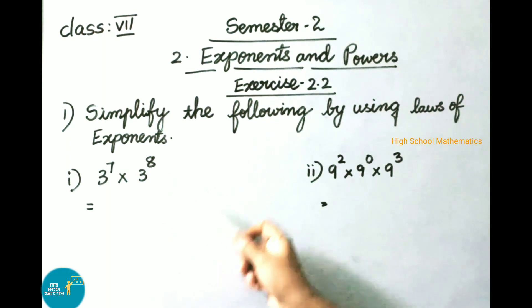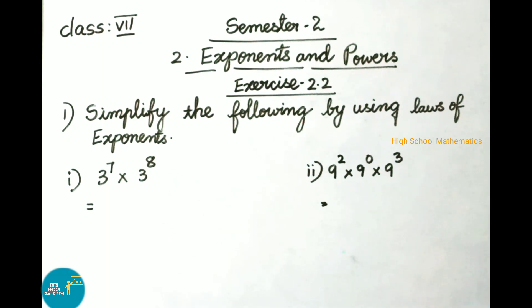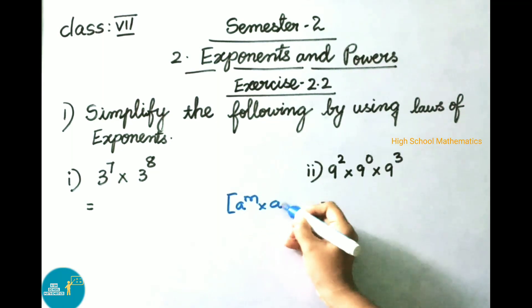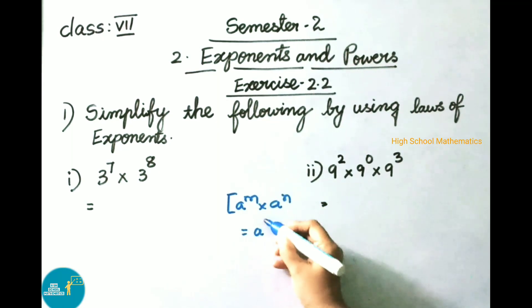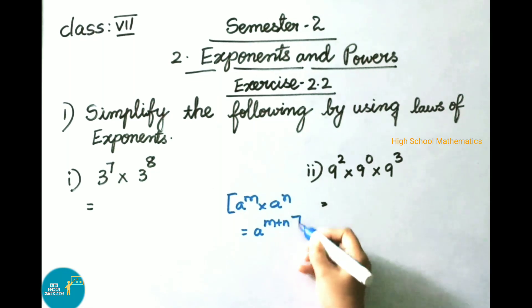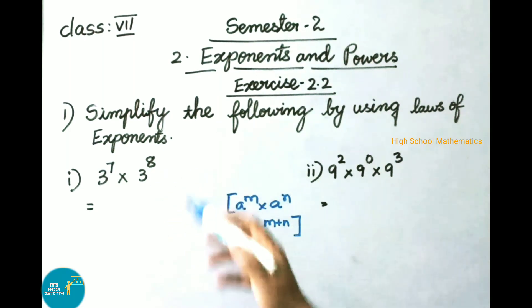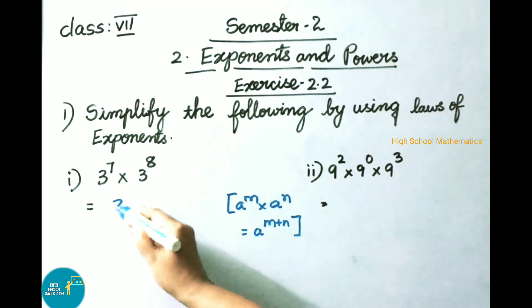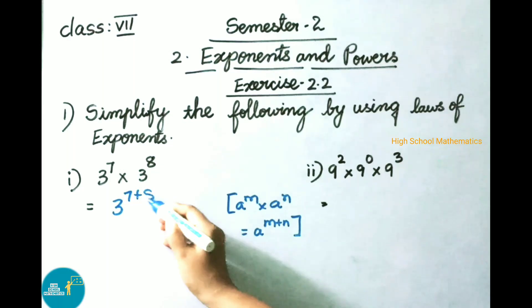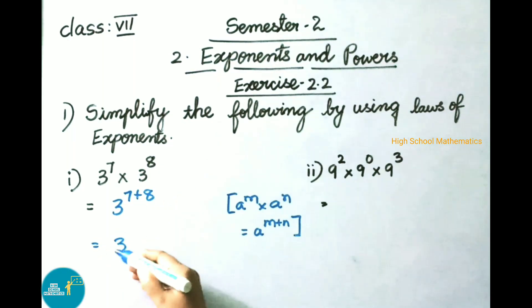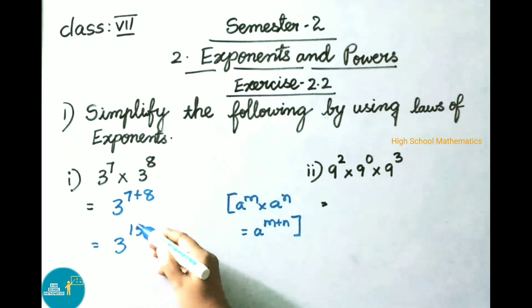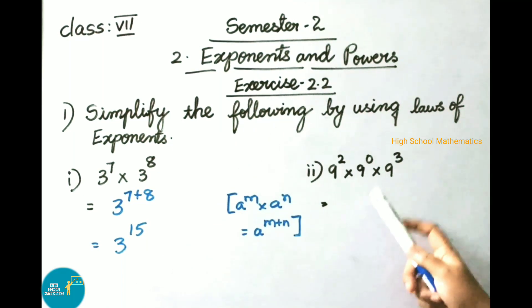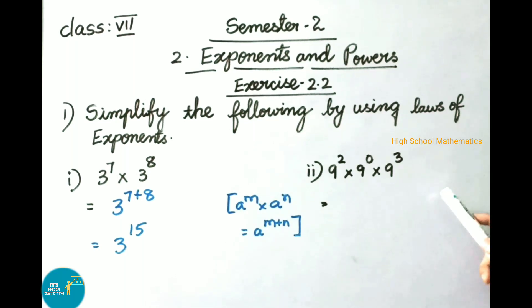The first sum: 3 power 7 into 3 power 8. It is looking like the formula a power m into a power n equals to a power m plus n. So we write 3 power 7 into 3 power 8 as 3 power 7 plus 8, that equals to 3 power 15.